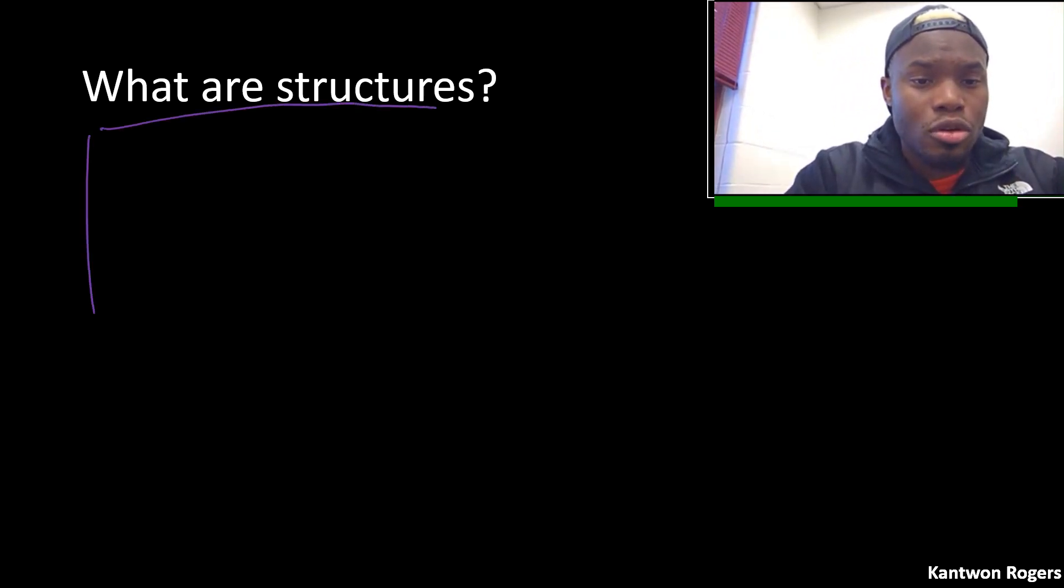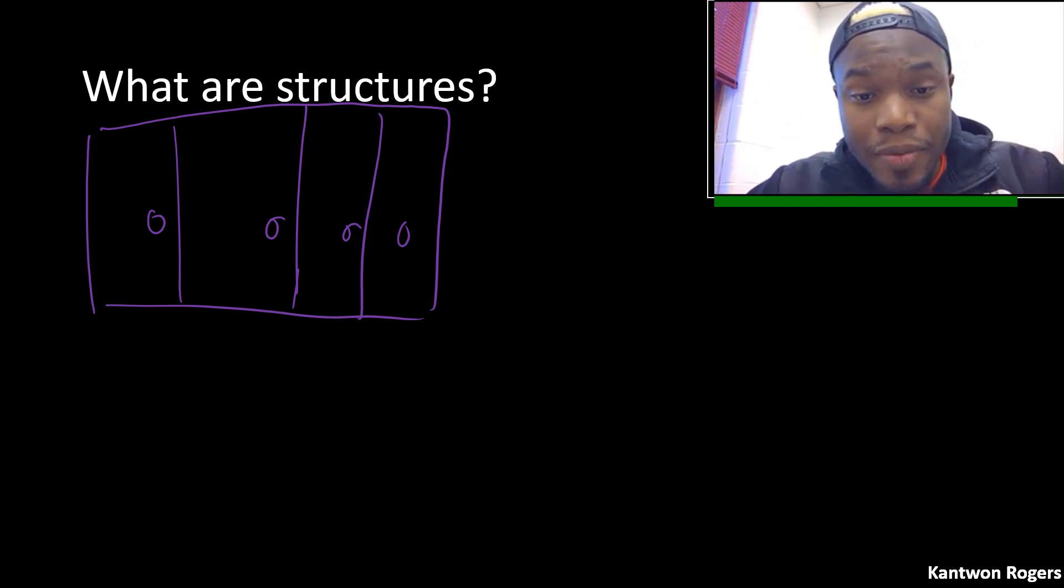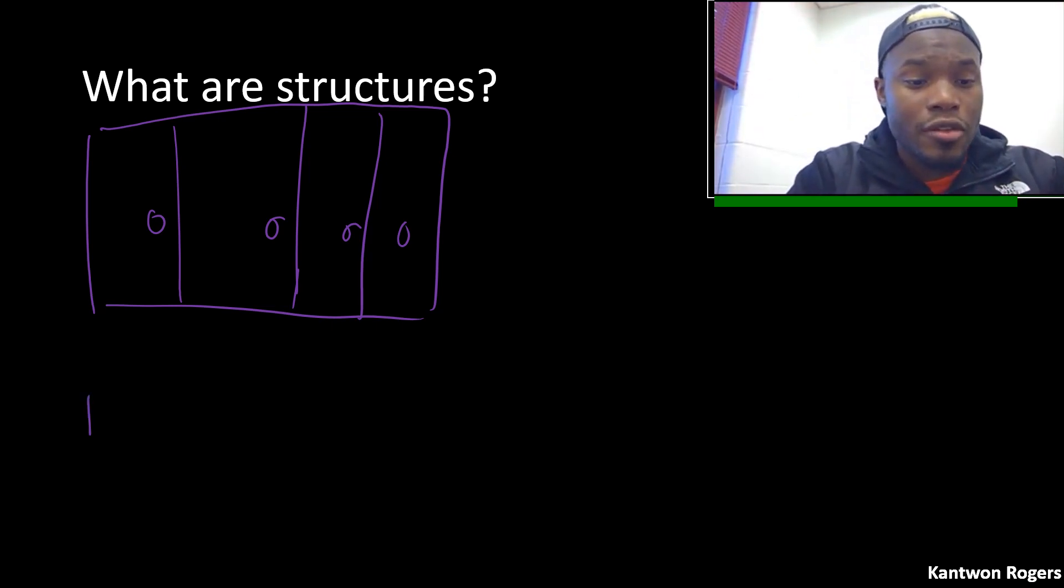They're kind of like lockers, like a row of lockers, let's say, where each part has its own little spot and a different way of accessing it. When we talked about cells, we kind of thought of them as kind of like a box of bags.